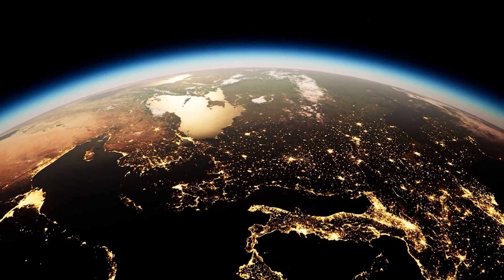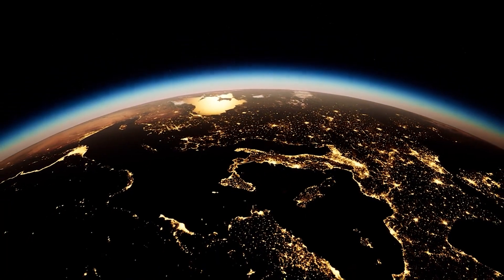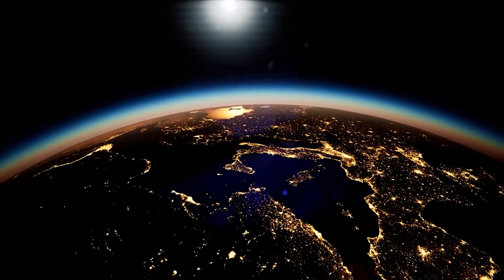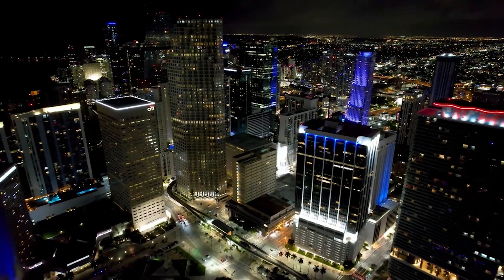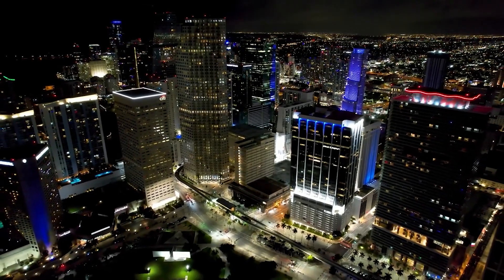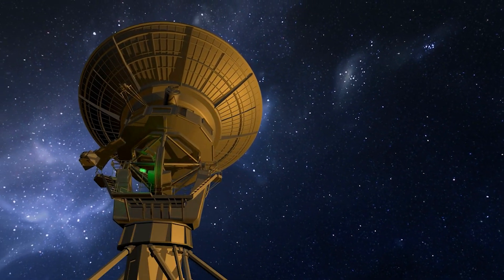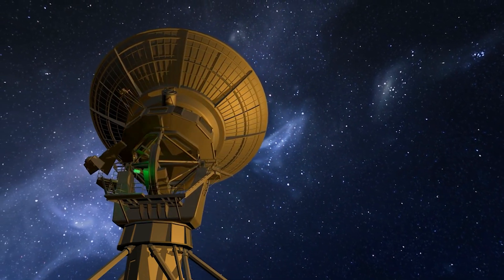From space, the most obvious sign that Earth is inhabited by intelligent life is the glow from the night side of our planet. Our cities emit light that is observable from space, but that's where we have a problem. Our current generation of telescopes is not powerful enough to see the lights on distant worlds.